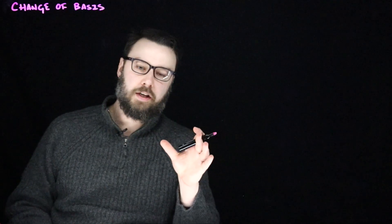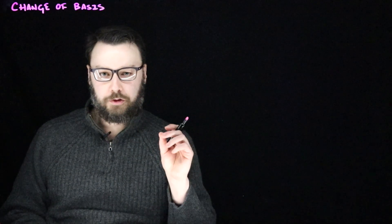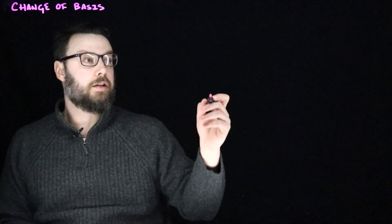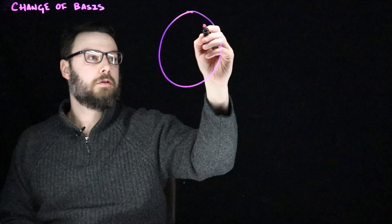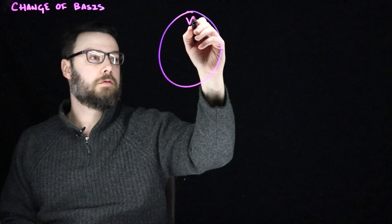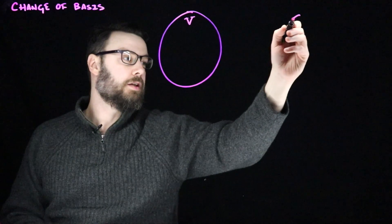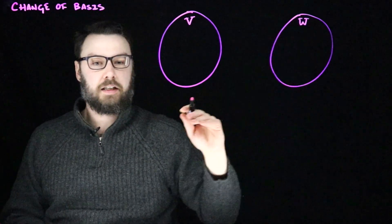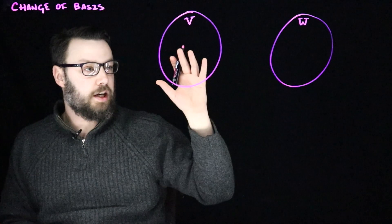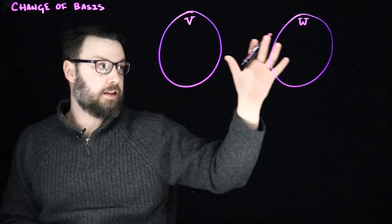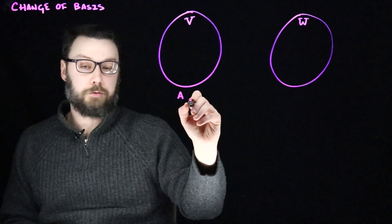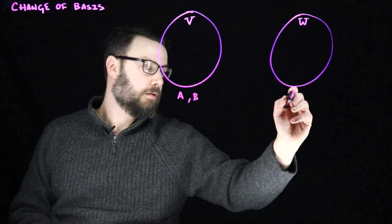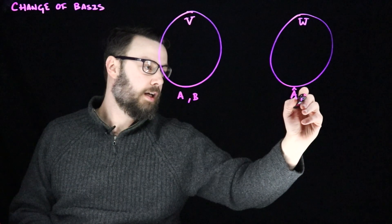Now, let's generalize that and talk about the idea of linear transformations combined with change of basis. Let's imagine that we have some vector space V and another vector space W. And let's further imagine that Alice and Bob each have a basis in V and a basis in W. Let's call those bases A and B, and let's call those bases A hat and B hat.